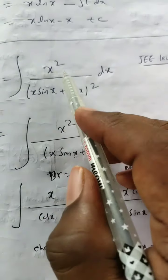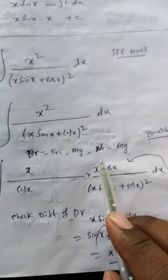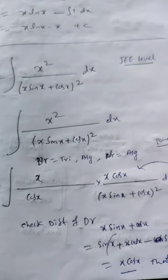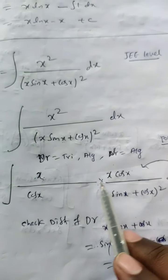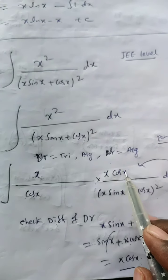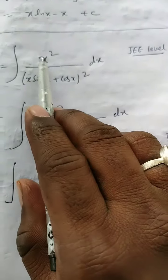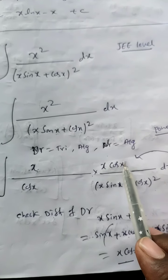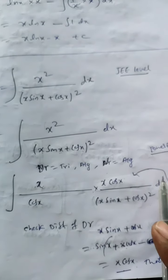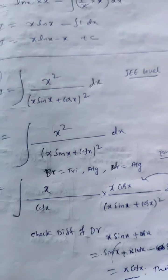The logic is: this question should be changed into the form with x cos x in the numerator. So I write x² as x · (x cos x) / cos x — I separate x² as x into x, multiply by cos x in the numerator, and divide by cos x. Now the numerator becomes x · (x cos x), which is exactly the differentiation of the denominator. This makes the question much simpler.